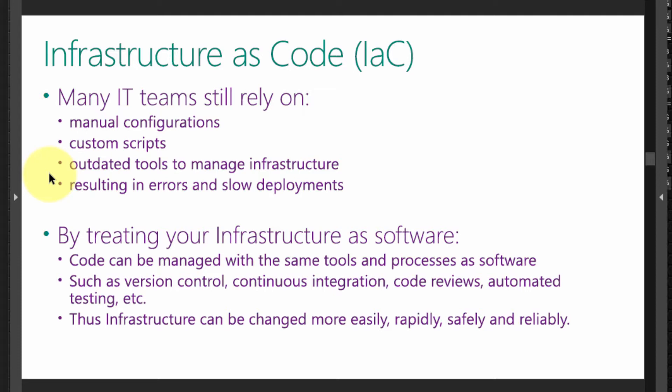Infrastructure as code is a new approach that allows our infrastructure — our actual data center, our resources, our servers, all other computing resources, back-end databases, and so on — to be managed with the same tools and processes that we use to manage our software. So we can, in effect, treat our infrastructure as code. Thus the name.